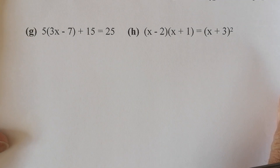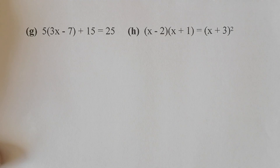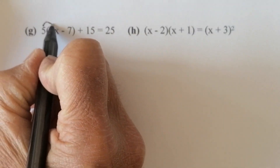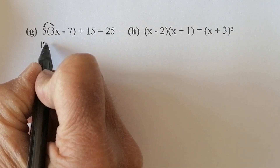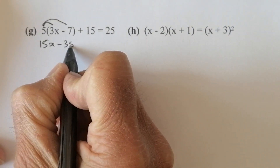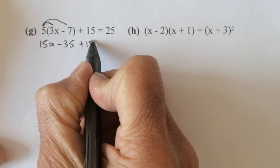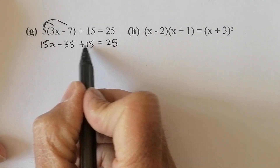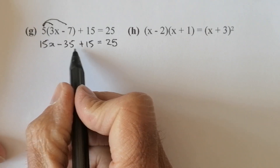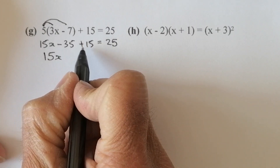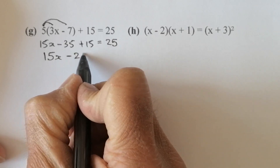Two more to do and that will be all for this video — just a short video. The last one looks quite complicated. Multiplying out the bracket: multiply that times that gives me 15x. 5 times minus 7 gives me minus 35. I've got a plus 15 sitting in there and 25 on the right-hand side. I'm going to gather these numbers together before any elimination: so 15x, and I've got minus 35 plus 15, which gives me minus 20 on this side.